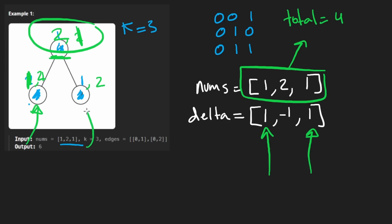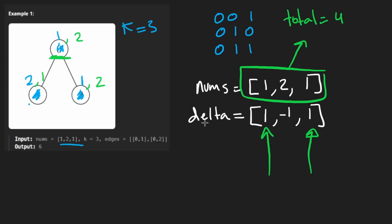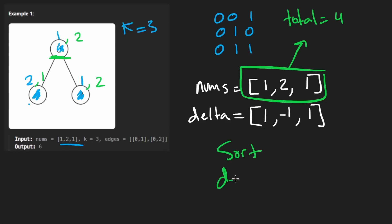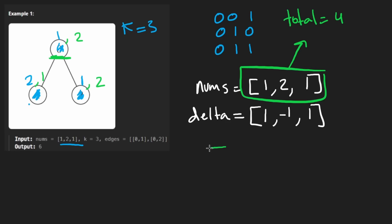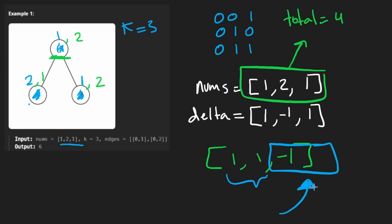To solve this greedily, we sort the delta array in descending order and go through values two at a time. For each pair, if the sum of the two deltas is positive, we add it to the total and continue. If at any point the pair sum is zero or negative, we stop — since the array is sorted, no subsequent pairs will be better.